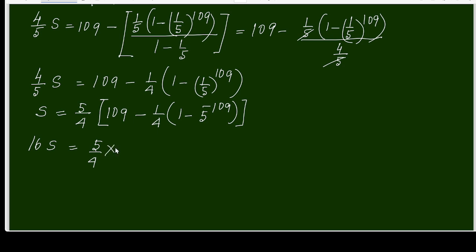I am simplifying a bit. It will be 4 times (109 minus 1 by 4 times 1 minus 5 to the power negative 109).